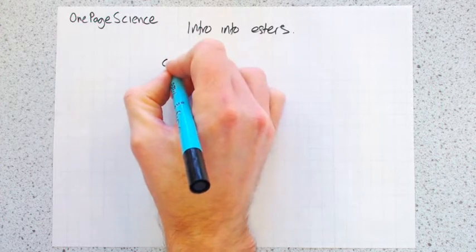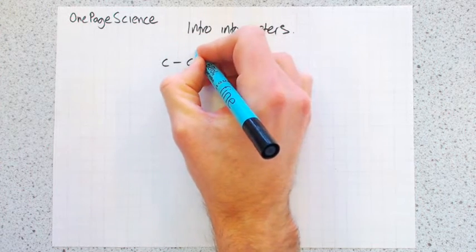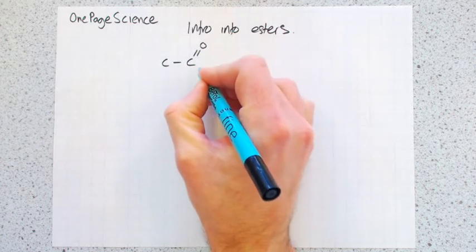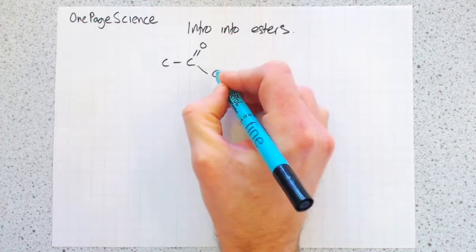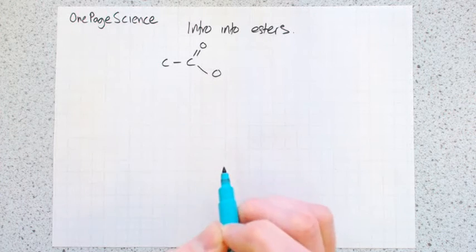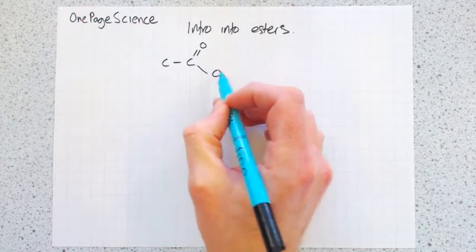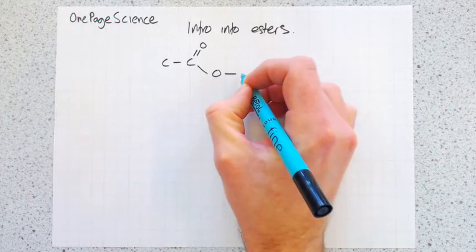So we have two carbons, and one of the carbons is a double bond to an oxygen, a single bond to another oxygen. So at this stage it's the same as a carboxylic acid. The difference between a carboxylic acid and ester is attached to this oxygen here is another carbon.